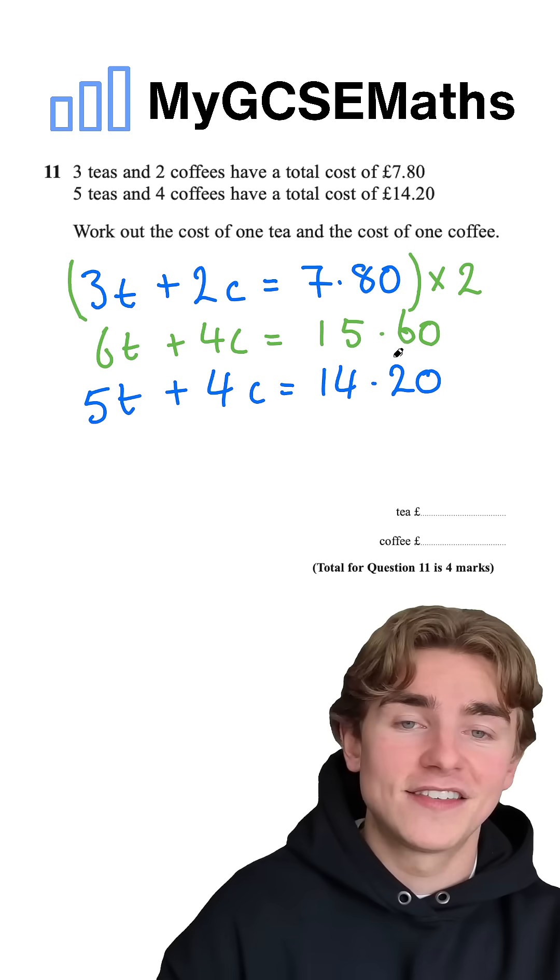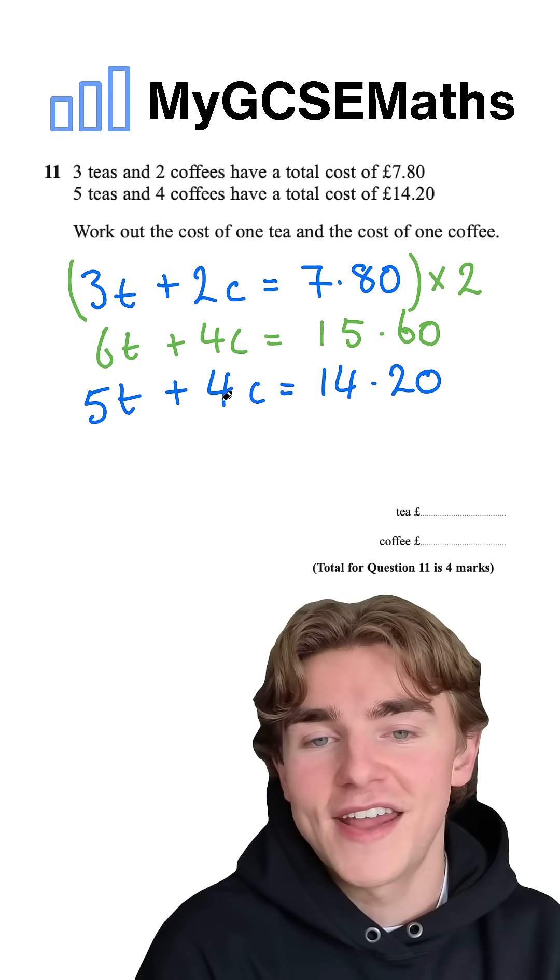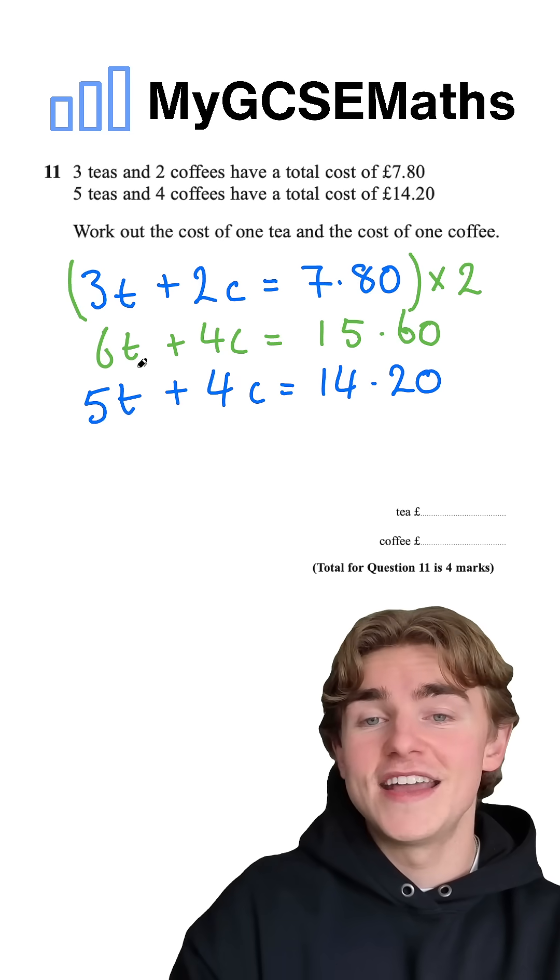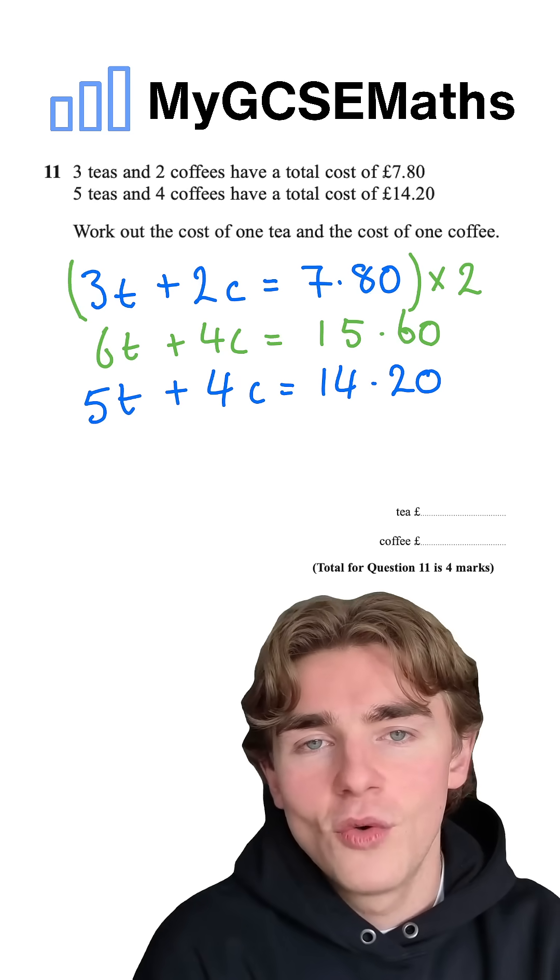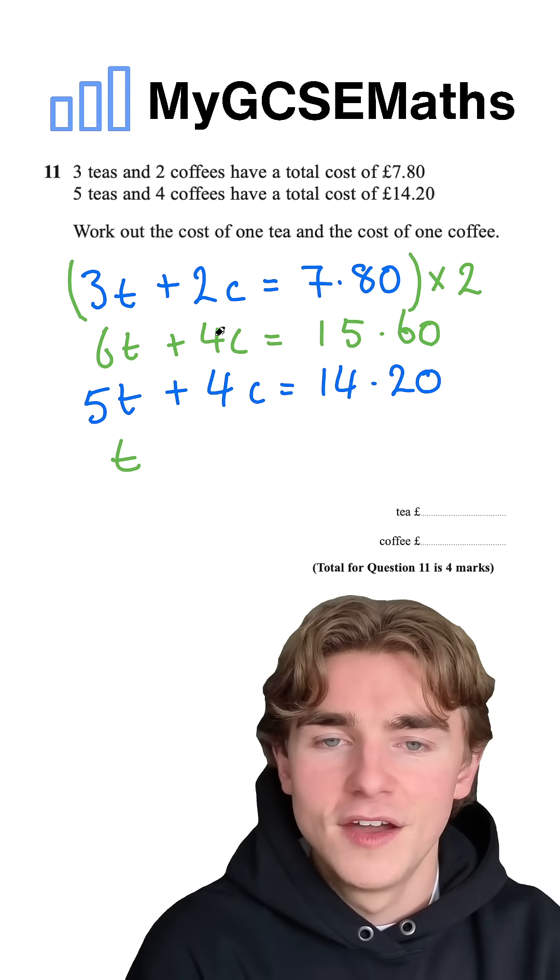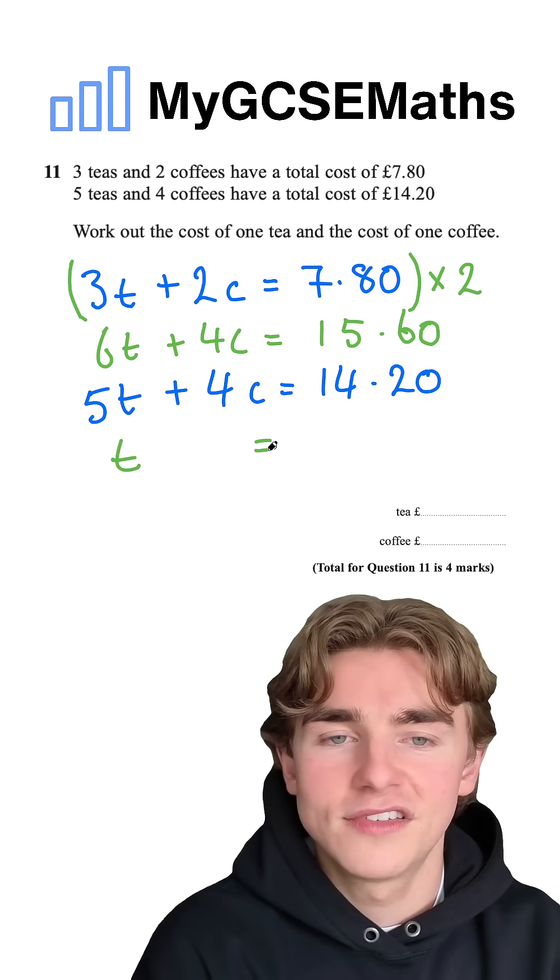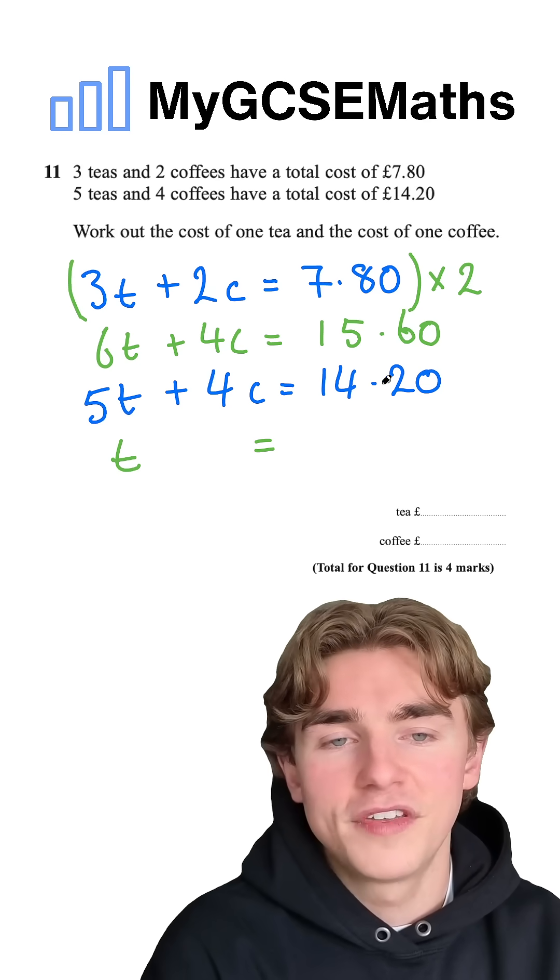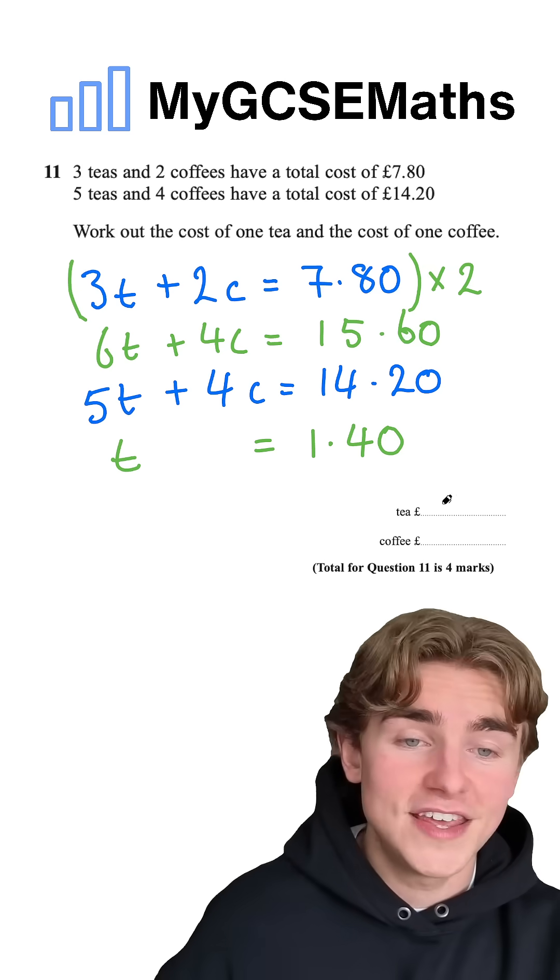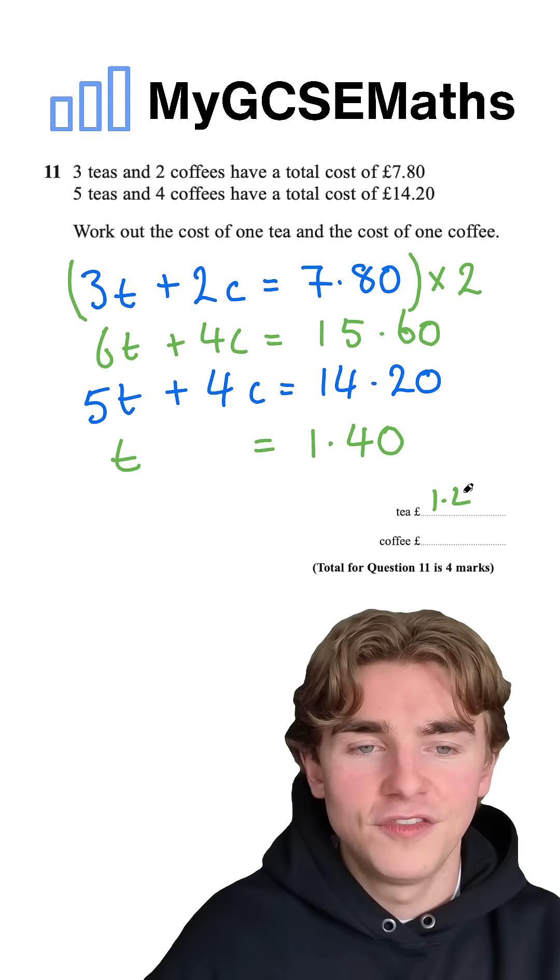Now that we have a match next to our c's, we can subtract our second equation from our first. I'm going to do it this way around because the value of the t is higher on the top equation. So six t subtract five t is one t. Four c subtract four c is zero, so they cancel each other out. Fifteen pound 60 take fourteen pound 20 is one pound 40. Now we have the value of t. We know that our t is one pound 40.